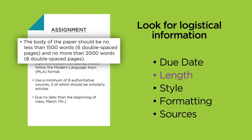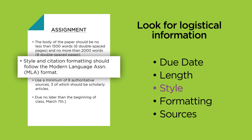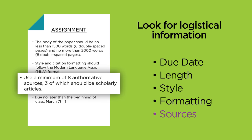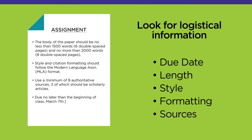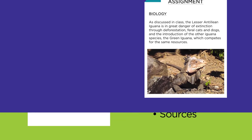Check the length — if your first draft is much longer or shorter than the assignment states, speak to your teacher. Consider style: is this a writing and citation style you've used before? If not, factor in time to learn it. Check formatting requirements such as spacing, margins, title page, heading, font size, and page numbers. Also note how many and what types of sources are required.